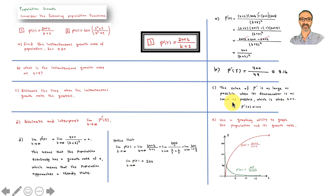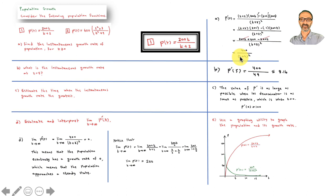To estimate when the instantaneous growth rate is greatest: using algebra, p prime is as large as possible when its denominator is as small as possible. At t equals 0, the denominator is (0 plus 2) squared equals 4, so p prime equals 400 over 4, which is 100. If t were 10, the denominator would be 12 squared — a much larger number — making p prime smaller. So the growth rate is greatest at t equals 0.